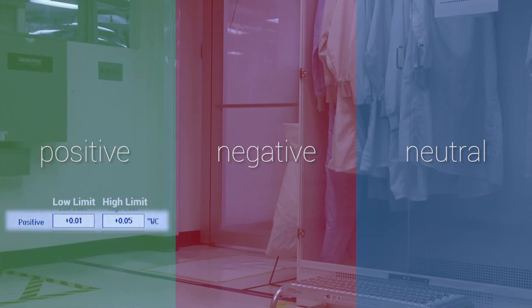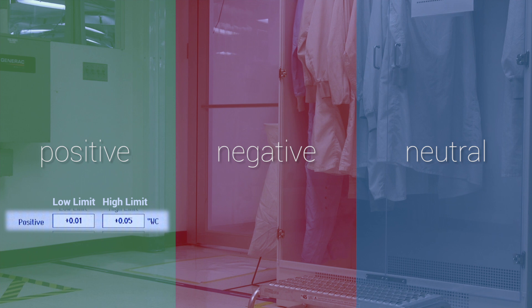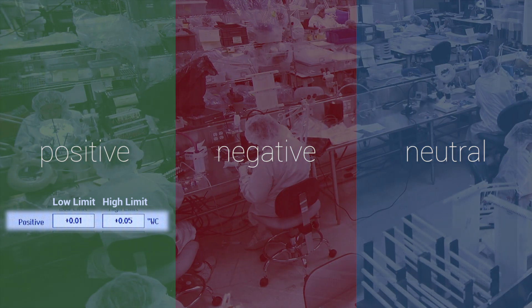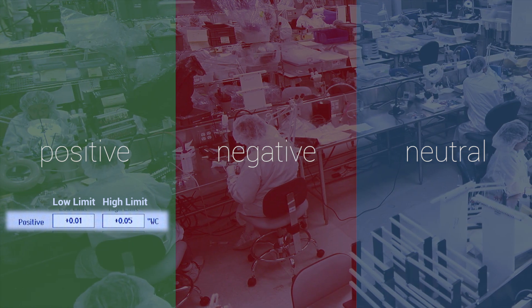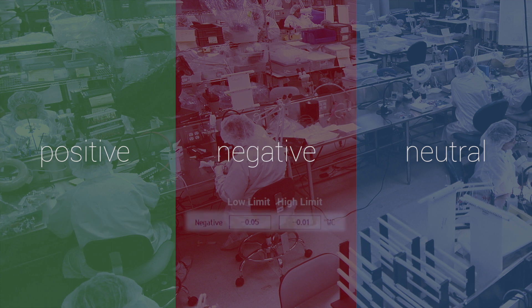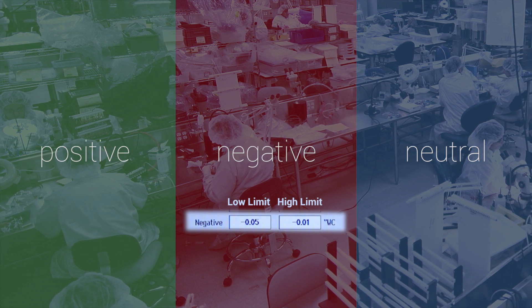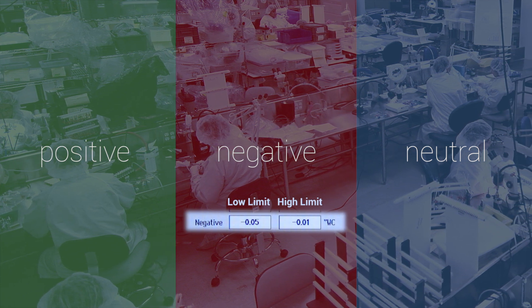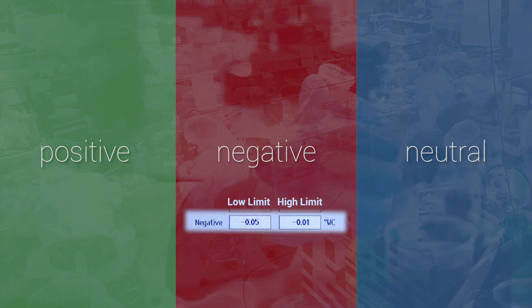A positive room will have an alarm set point slightly above zero differential pressure to some greater positive pressure. A negative pressure room will have alarm set points from less than zero differential pressure to a deeper negative pressure.